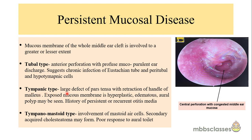In the second variety, the tympanic type, there will be a large defect of the pars tensa with retraction of the handle of malleus. The exposed middle ear mucosa will be edematous, inflamed and hyperplastic, with history of persistent discharge or recurrent otitis media. In the third variety, the tympanomastoid type, the mastoid ear cells are also involved and there is a chance of developing acquired cholesteatoma.